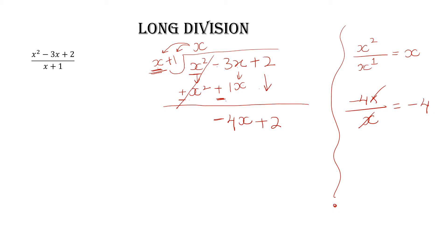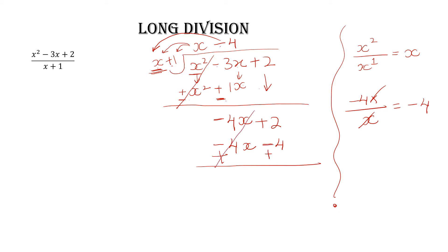Whatever you get, write it in the quotient — that means -4. Now multiply this -4 by the divisor one by one. -4 times x gives you -4x; -4 times 1 gives you -4. Change the sign: negative becomes positive. So -4x and +4x cancel each other, and +2 plus 4 gives you 6. That's the remainder.